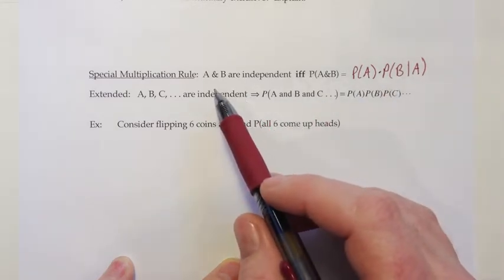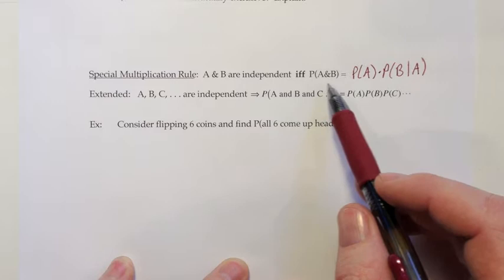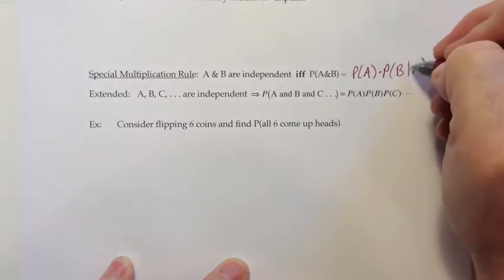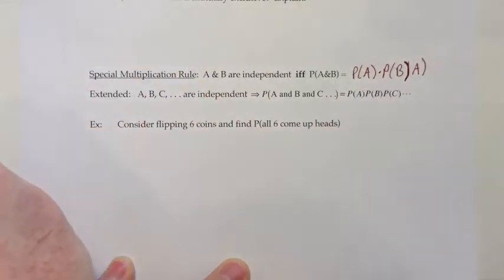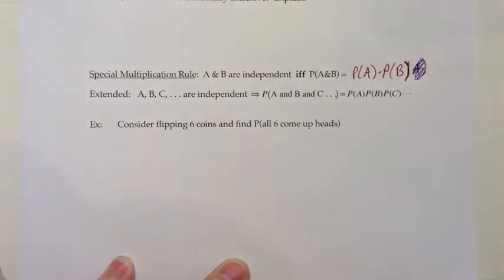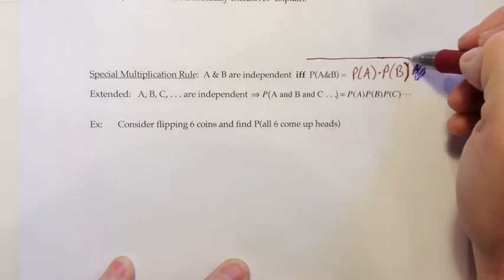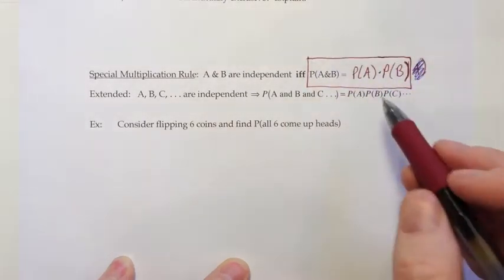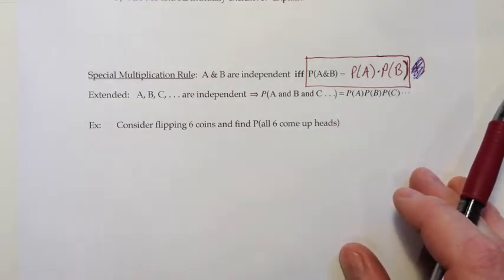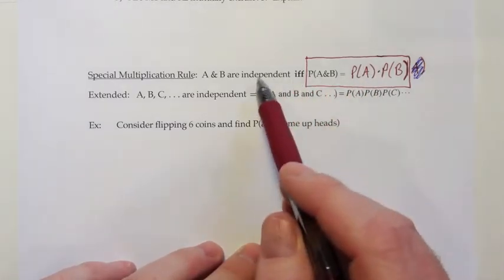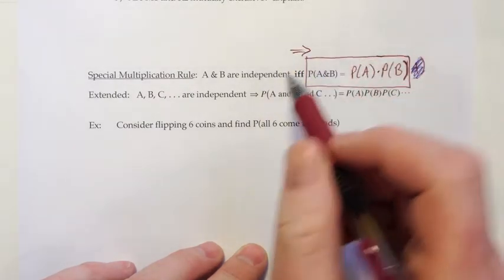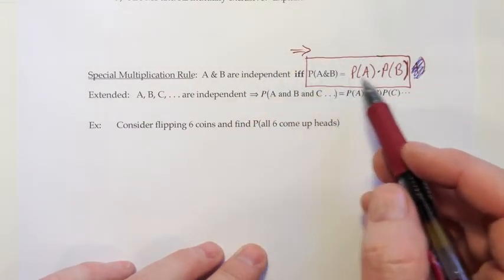So the special multiplication rule says: if you know two events are independent and you want the probability that they'll both happen, then instead of doing a regular probability times a conditional, you can just do two regular probabilities times each other and get the same result. So for the probability of A and B, just take the probability of A by itself times the probability of B by itself, multiply those together, and that's your answer. The if-and-only-if means this could be read in either direction, but the most common use is: if we know they're independent, we find this AND by multiplying them together.